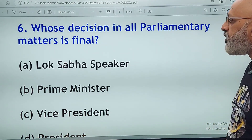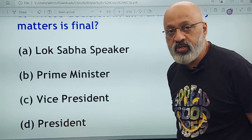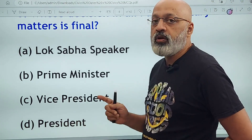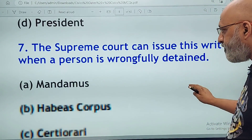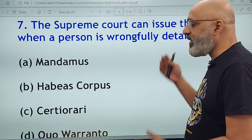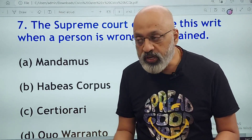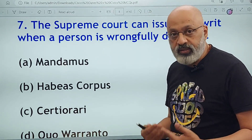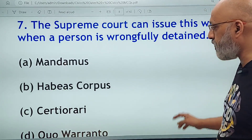Whose decision in all parliamentary matters is final? Lok Sabha Speaker, Prime Minister, Vice President, or the President? The correct answer is the Lok Sabha Speaker. The Lok Sabha Speaker's decision in all parliamentary matters is final — remember this line. The Supreme Court can issue the writ of habeas corpus when a person is wrongfully detained — arrested by the state or kidnapped. In such cases, habeas corpus can be proclaimed by the court to produce the person, or the body in case the person is dead.